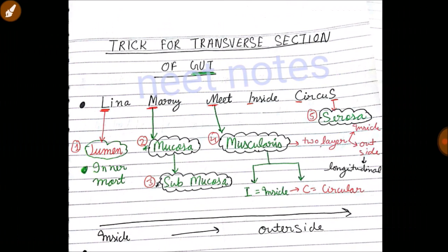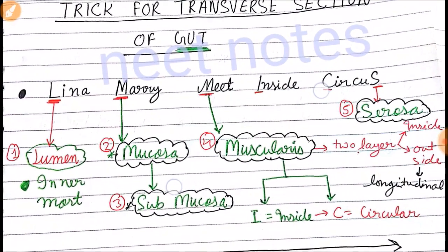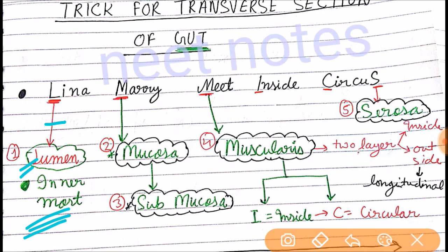Let's see the trick. For this, I have made a trick that Lena Mary meet inside circus. L for lumen, which is the innermost layer, and M for mucosa, which is the second layer from inside.